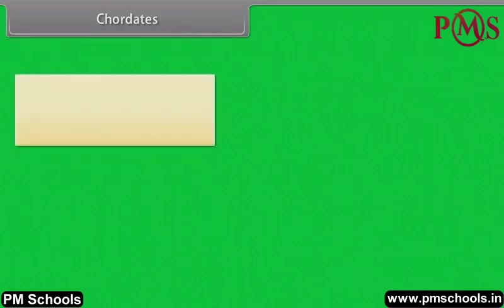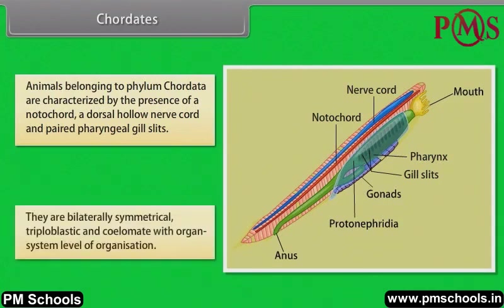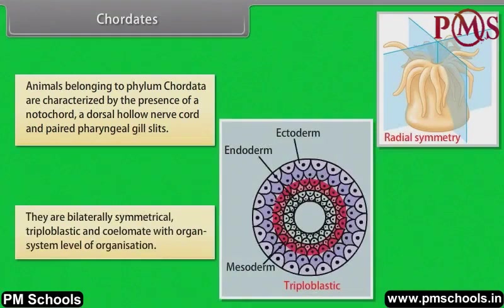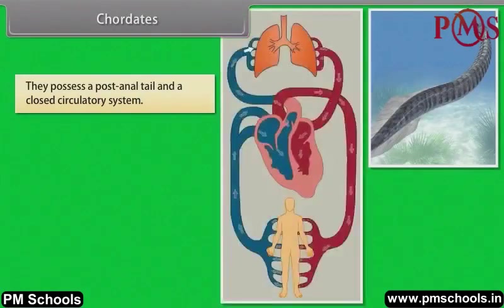Caudates. Animals belonging to phylum Chordata are characterized by the presence of notochord, a dorsal hollow nerve cord and paired pharyngeal gill slits. They are bilaterally symmetrical, triploblastic and coelomate with organ system level of organization. They possess a post-anal tail and a closed circulatory system.